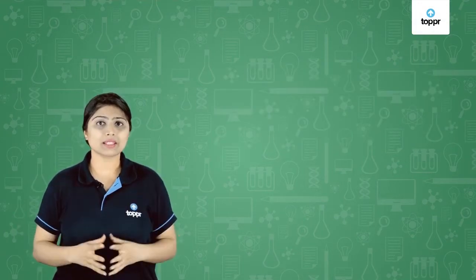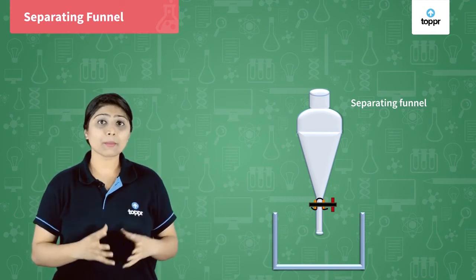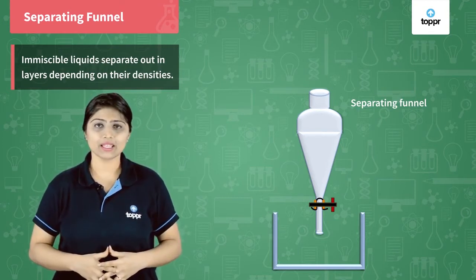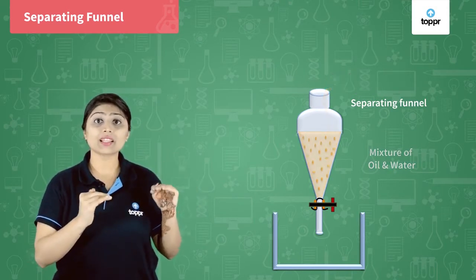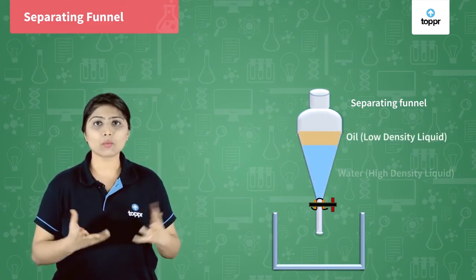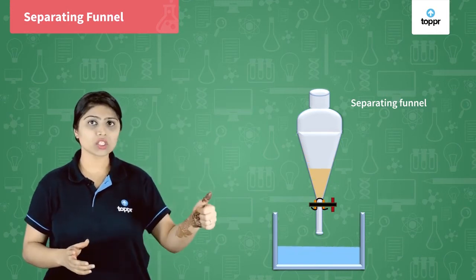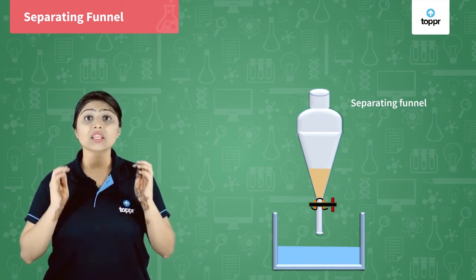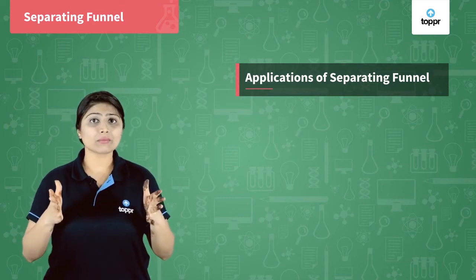What about mixtures of immiscible liquids like oil and water? Immiscible liquids are liquids that do not dissolve into each other. Such mixtures can be separated using a separating funnel, which works on the principle of two immiscible liquids separating out according to their densities. We put the oil and water mixture in the separating funnel and leave it undisturbed for some time. The oil starts floating on top because its density is less than water. We then open the knob of the separating funnel so that the water is collected from the bottom, and then close the knob once the water is collected, leaving the oil behind.